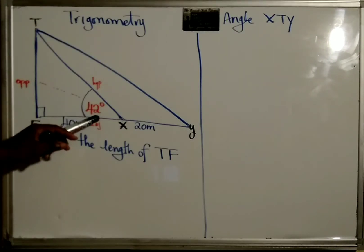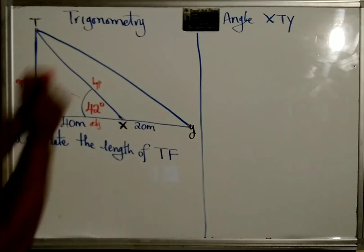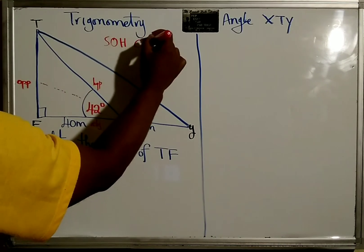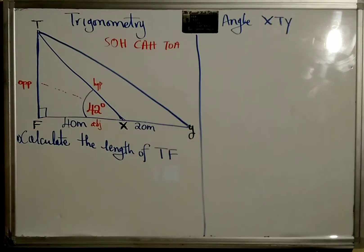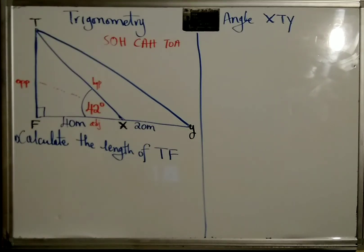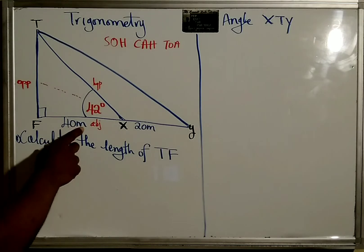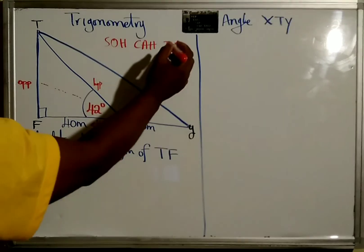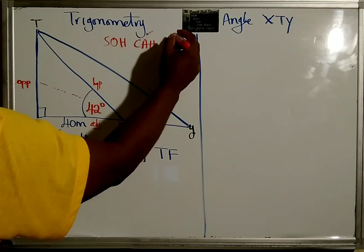So sin is opposite over hypotenuse, cos is adjacent over hypotenuse, and tan is opposite over adjacent. I do videos on this but I want to make sure everyone understands how to use it. So the side that we're given must be included, so we have to include the adjacent side. Only two of them have adjacent: cos and tan.